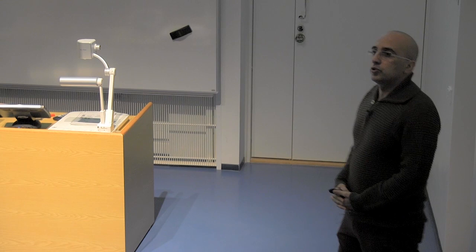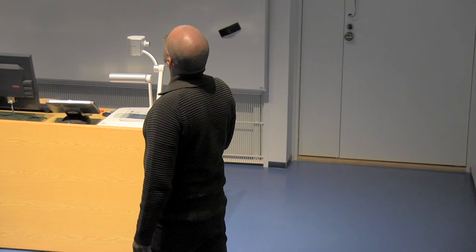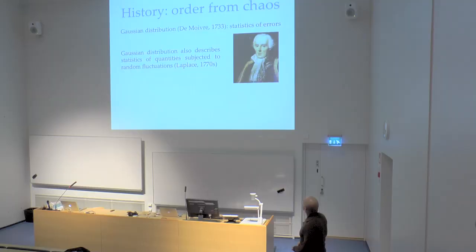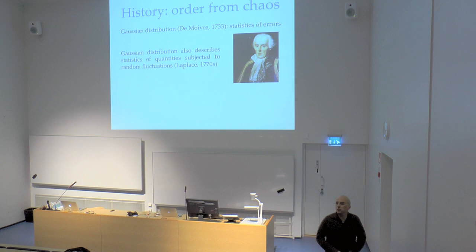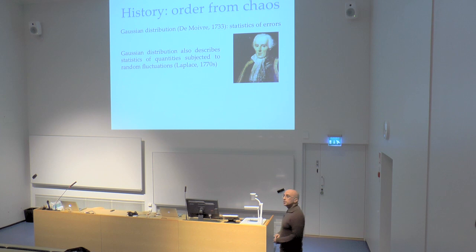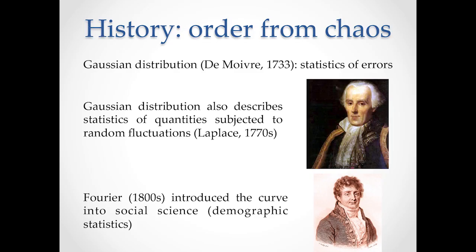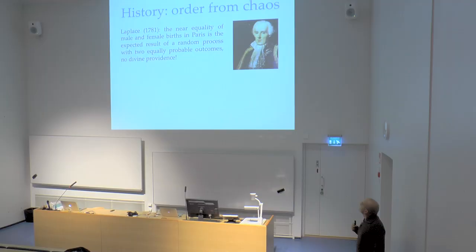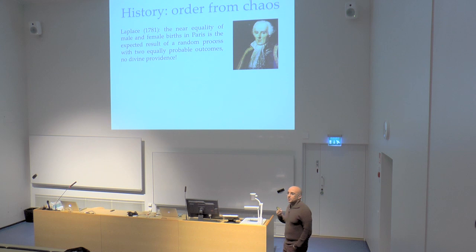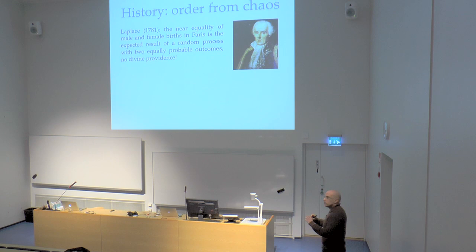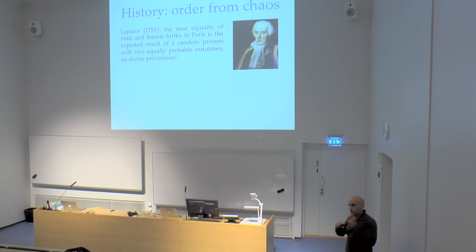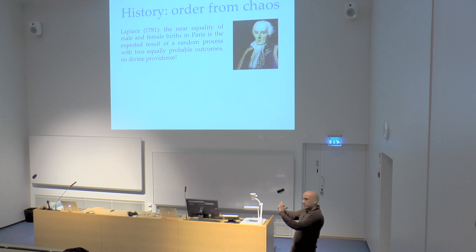Laplace realized the Gaussian distribution also described many things subjected to fluctuations — like the distribution of the height of people, or the girth of people. Fourier in 1800 introduced the curve into social science, realizing that demographic statistics were distributed essentially according to the Gaussian function. For us now it's obvious. The Gaussian distribution was even portrayed on the 10 Deutschmark bill — Gauss's face and the formula. Some people would take out the bill and check that all the coefficients and normalization were correct.